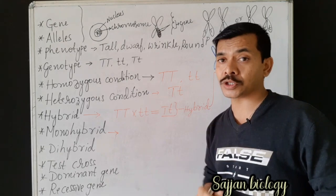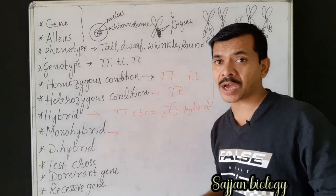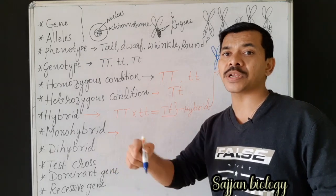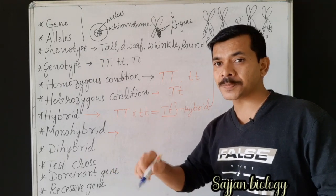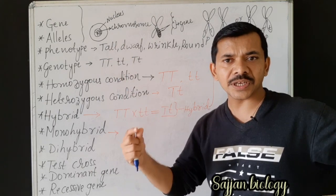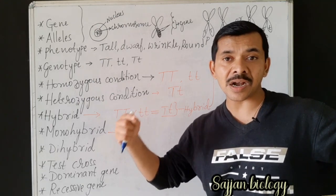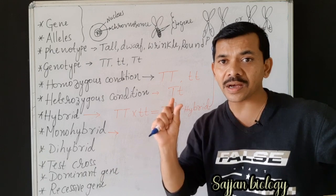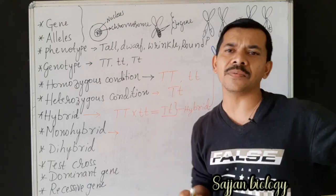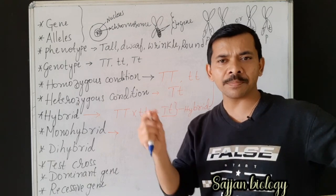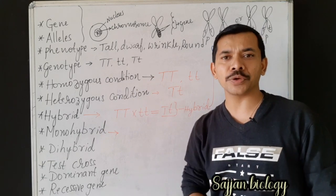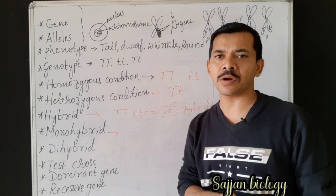Homologous chromosomes may have different genes, but the genes present in those chromosomes express themselves in alternative forms. The pair of genes which are expressed in an alternative form are called alleles. The term 'allele' belongs to genes — it is an important term, and if you have any doubts about alleles, please drop your question in the comment section.